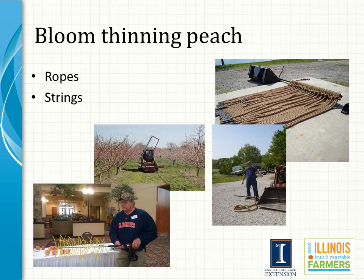Thinning usually requires several steps. In the case of peaches, the first thinning pass would be a bloom thinner, using ropes dragged through the tree, or a string thinner. If additional crop still needs to be removed, branches may be clubbed later when fruit are small and at a stage when they more easily detach from the tree, referred to as being loose. The final crop density is set by hand thinning.